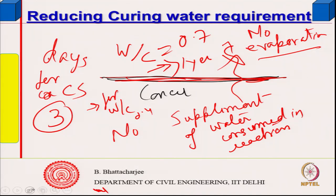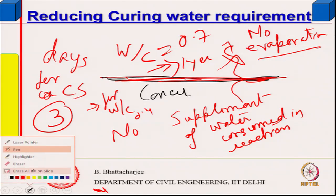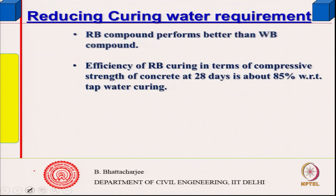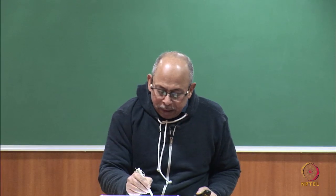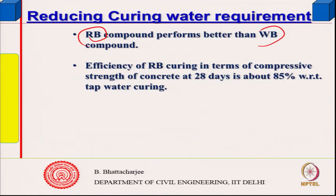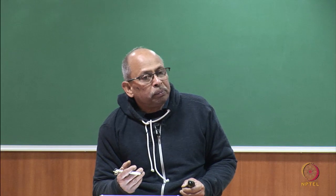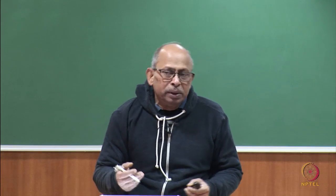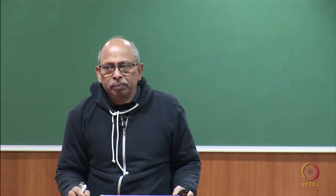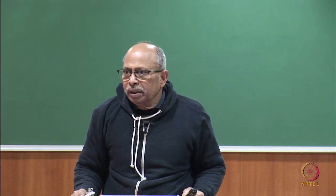Curing compounds come in two main varieties: resin-based and wax-based. Treated waste water can also be used for curing as an alternative water source. Engineering judgment is required to design the system judiciously — balancing cement content, water-cement ratio, admixture use, and curing method to achieve a sustainable and durable concrete.